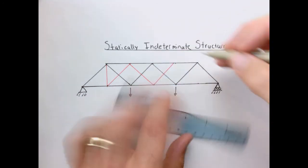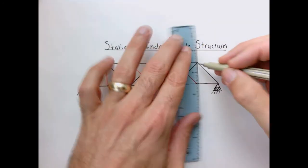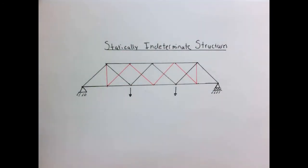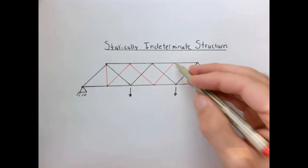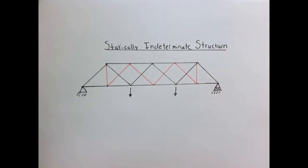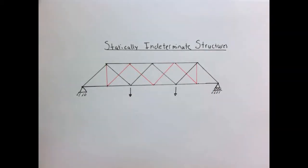It might not seem obvious at first, because before the red elements were added, the truss was standing on its own and we could calculate the forces — they were sufficient to hold the load up. If those new elements were made out of rubber bands, it probably wouldn't do much to the rest of the structure, especially if the black members are steel. However, if steel bars were added, something ought to happen, but there's no way to calculate the loads in those members from what we've learned so far.